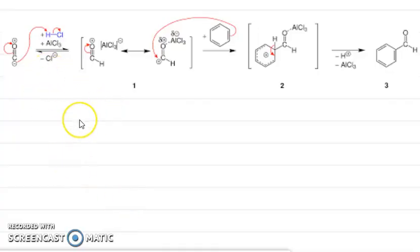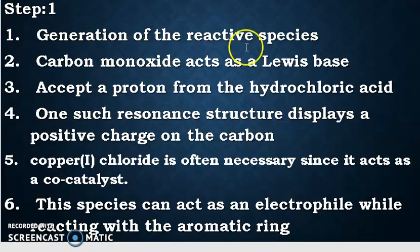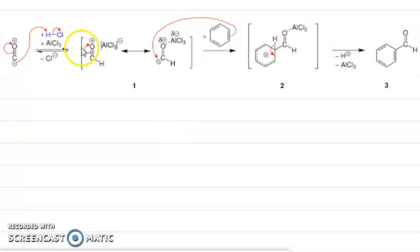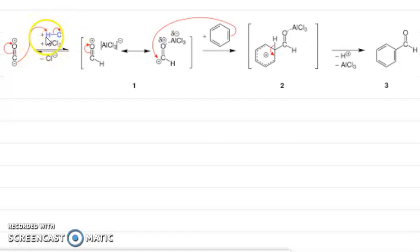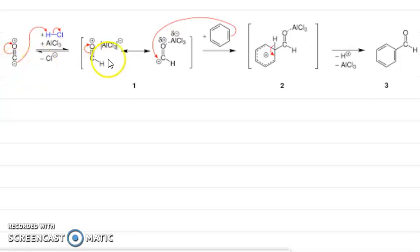In step one, the generation of the reactive species: we have carbon monoxide — C double bond O. It does not react with benzene first; it reacts with HCl. The proton in hydrochloric acid reacts with the carbonyl group. It comes and attaches to the carbon atom, because HCl ionizes into H⁺ and Cl⁻. So this proton of HCl attaches to the carbon atom of carbon monoxide.